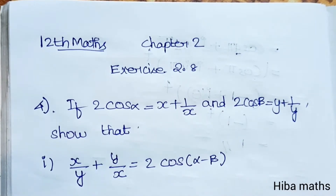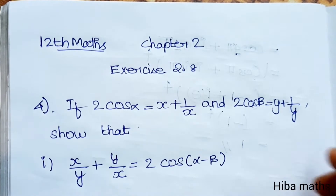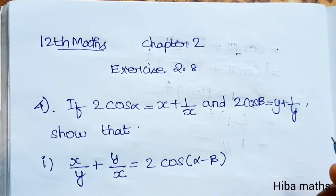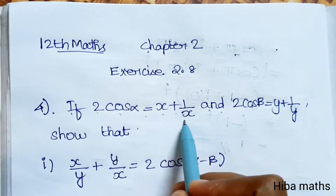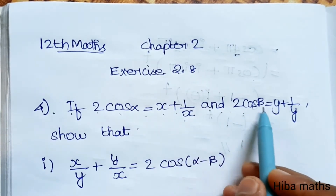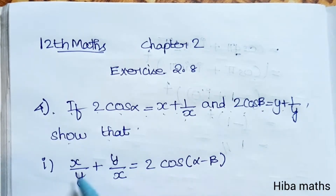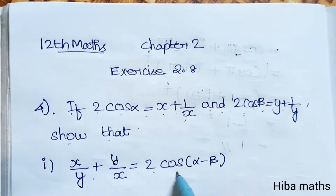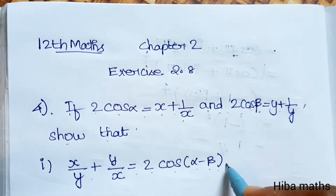Hello students, welcome to Hibamax 12 Standard Max Chapter 2. We are going to solve the 4th question. The 4th question has subdivisions. If 2cosα equals x plus 1/x, and 2cosβ equals y plus 1/y, then show that x/y + y/x equals 2cos(α - β).